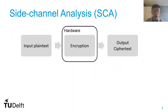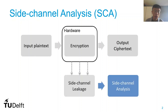Let's give a brief introduction about Side Channel Analysis. Assuming that we have a hardware running the encryption algorithm, we input plaintext and we can get the ciphertext at the output. However, during these executions, we will have leakage — we call it Side Channel Leakage. It can come from the power domain or electromagnetic domain. By analyzing this leakage and doing some mathematics, we can actually retrieve the secret information, and we call it Side Channel Analysis.